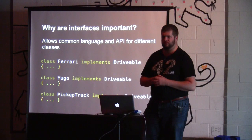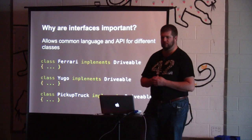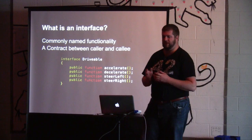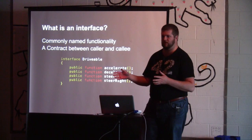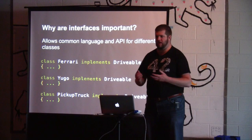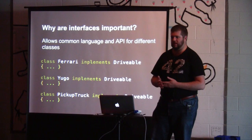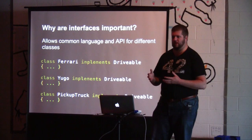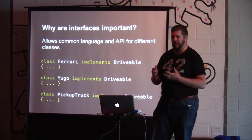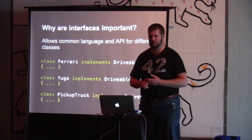In your class, you put your interface type, and that says within the class these four functions have to exist. If they don't exist, PHP is going to throw an error — it will list out the parts of the interface you have not implemented. We've got very different classes: a Ferrari, a Yugo, and a pickup truck. All of them are drivable in different ways, but they're all drivable. So if I'm using these in an object-oriented program, I know I can call accelerate, decelerate, steer left, or steer right on every single one of them because it's guaranteed — they said they implemented that particular interface.